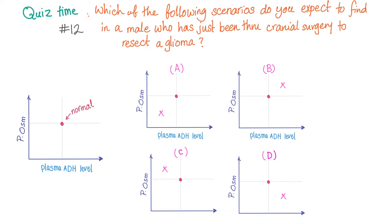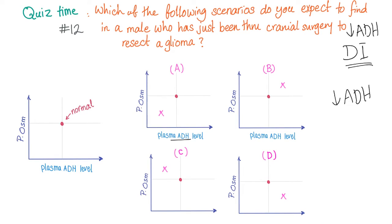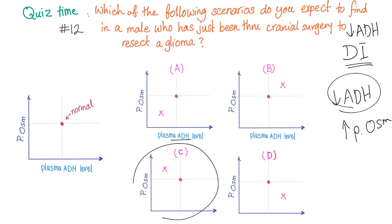After you resect the glioma, what will happen to the plasma ADH? Let's suppose there's a problem with the hypothalamus, which will lead to decreased secretion of ADH — this is called central diabetes insipidus. In central diabetes insipidus, plasma ADH level decreases. When you decrease ADH, you are wasting water in the kidneys, so your plasma is super concentrated and plasma osmolality goes up. We have less plasma ADH and increased plasma osmolality — the answer is C.